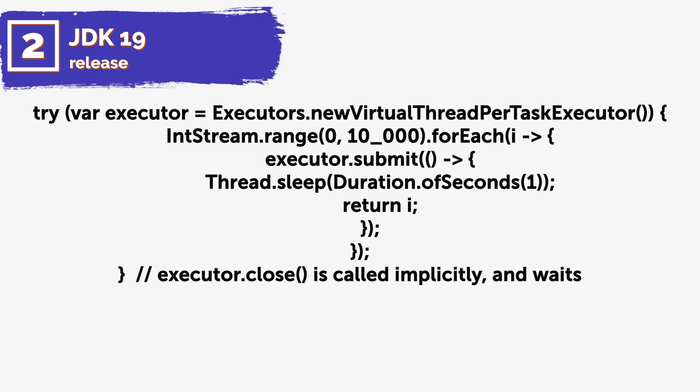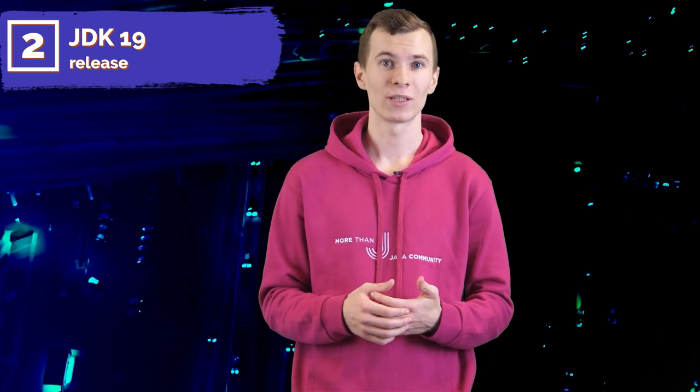A preview of virtual threads, which are lightweight threads that dramatically reduce the effort of writing, maintaining and observing high throughput concurrent applications. Goals include enabling server applications written in a simple thread-per-request style to scale with near-optimal hardware utilization, enabling existing code that uses the Java.lang thread API to adopt virtual threads with minimal change, and enabling troubleshooting, debugging and profiling of virtual threads with existing JDK tools. This feature is also part of Project Loom.